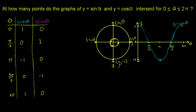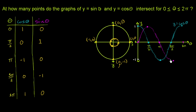Now for sine of theta: at theta=0 it's 0, at pi/2 it's 1, at pi it's 0, at 3pi/2 it's -1, and at 2pi it's 0. The graph of sine of theta looks like a smooth wave shifted relative to cosine.